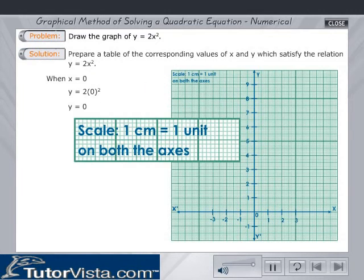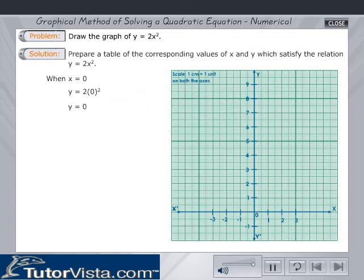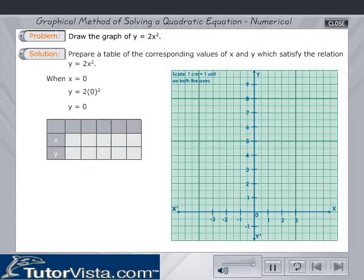Scale: 1 cm is equal to 1 unit. The coordinates for point A are (0, 0), for point B (1, 2), for point C (2, 8), for point D (-1, 2), and for point E (-2, 8).